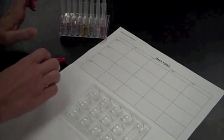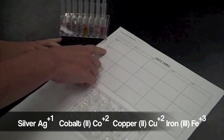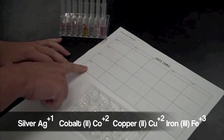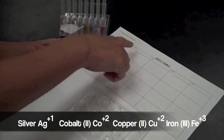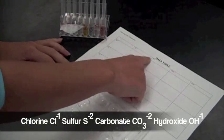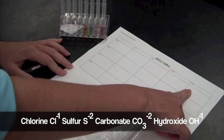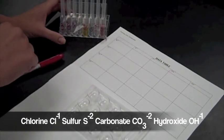So these are our compounds that we have: silver, iron 3 specifically, copper 2. Chlorine, sulfur, carbonate, and hydroxide are going to be our anions.